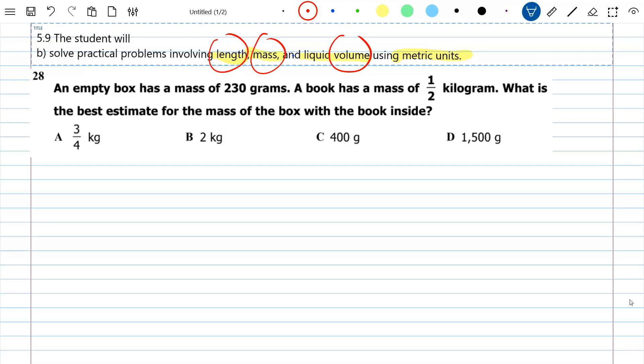So let's go ahead and read this question and start highlighting our important information. I have an empty box, and that actually matters, has a mass of 230 grams. A book has a mass of half a kilogram. What is the best estimate, so I don't have to be exact here, for the mass of the box with the book inside.